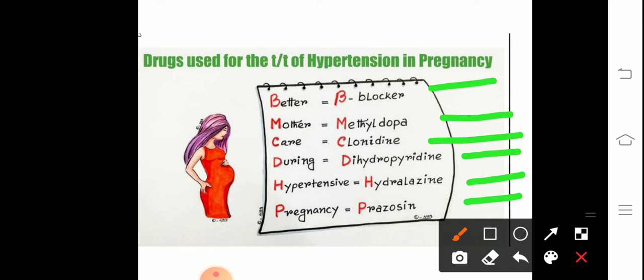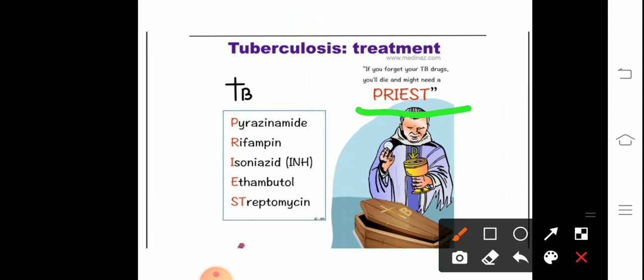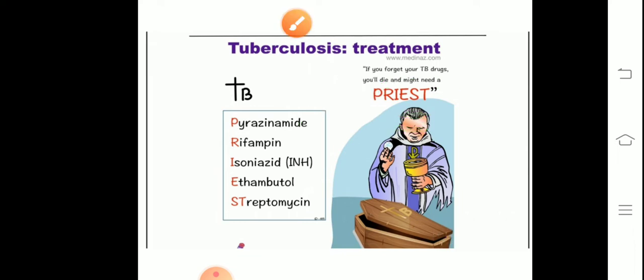Next mnemonic, the treatment of tuberculosis. The mnemonic: if you forget your TB drugs you will die and might need a PRIEST. Now we can remember this by PRIEST: P stands for pyrazinamide, R stands for rifampin, I stands for isoniazid, E stands for ethambutol, and S stands for streptomycin. Tuberculosis treatment now you remember by the mnemonic PRIEST.